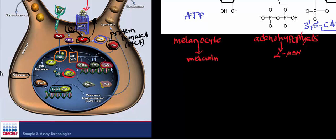BCL2 promotes cell survival by preventing apoptosis, or programmed cell death. It prevents apoptosis of the melanocyte, so the melanocyte ends up living longer and is able to carry out its action for a longer period of time. Therefore, it's able to make more melanin for longer because apoptosis is inhibited by BCL2.